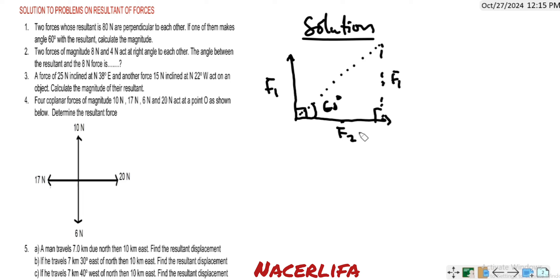The question says calculate the magnitude — that is the magnitude of the force that makes angle 60 degrees with the resultant. Looking at this: if this is 60 degrees and this is 90 degrees, the sum of angles in the triangle is 180, so this will be 30 degrees. We are interested in the force that makes angle 60 degrees.